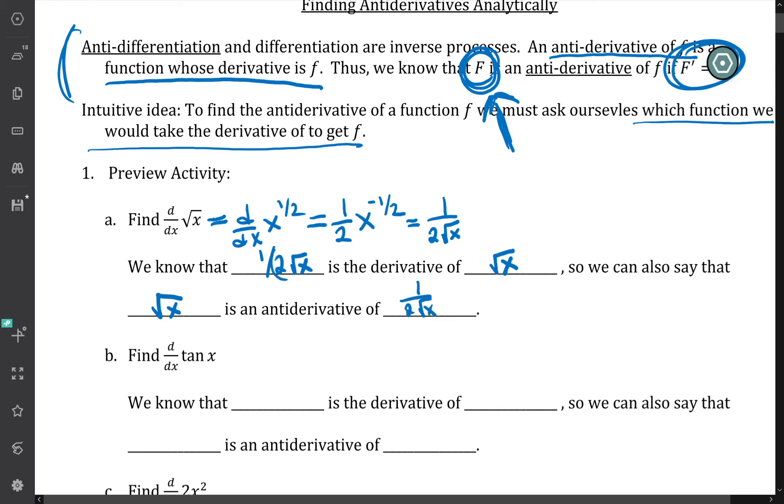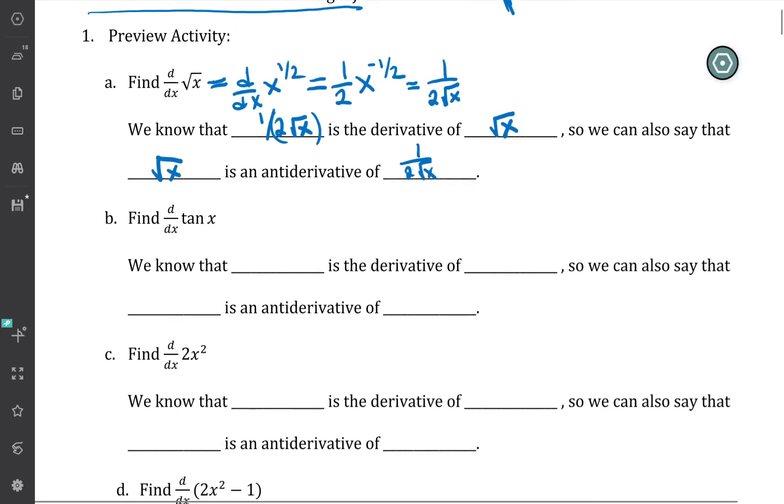This is the general idea, and try not to go on autopilot on something like this too much, really think about it. If we know the derivative of a function, then we know that that original function is the antiderivative of that derivative. So reverse processes here, right? Inverse processes. If you take the derivative, and then you take the antiderivative, you should get back where you started.